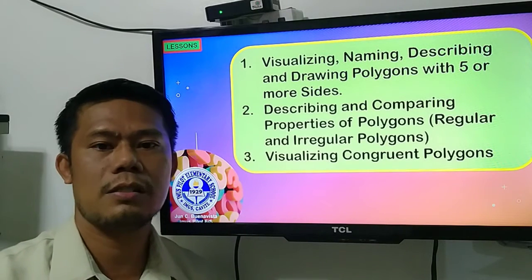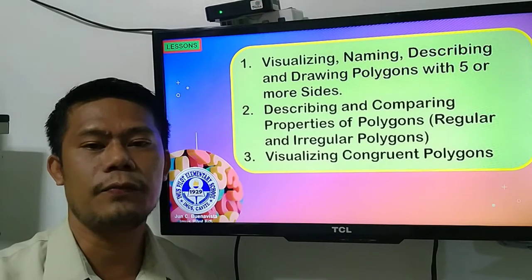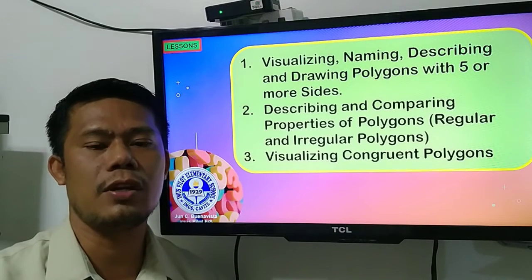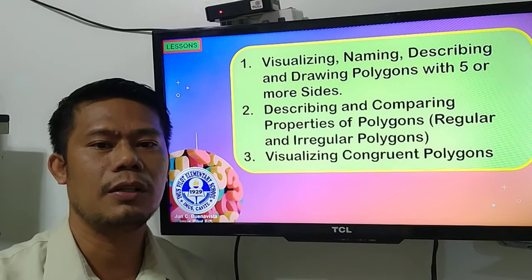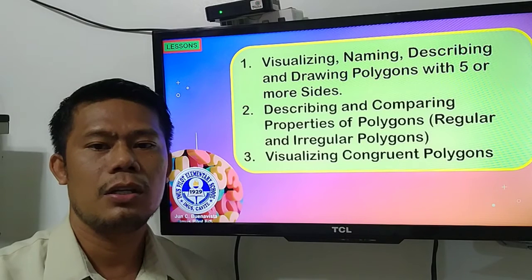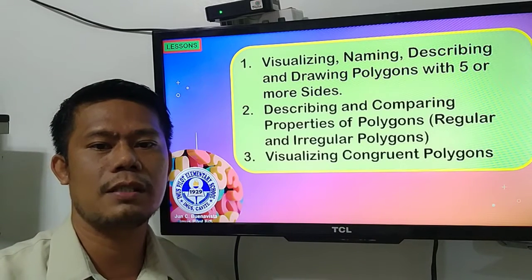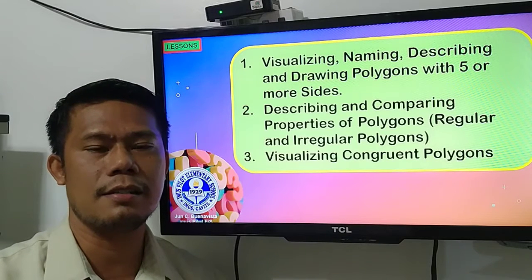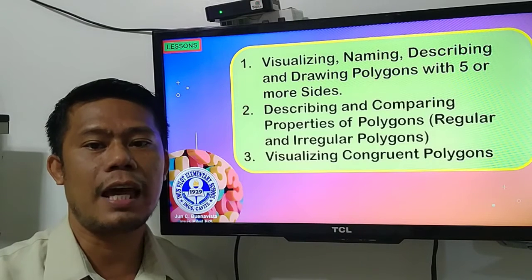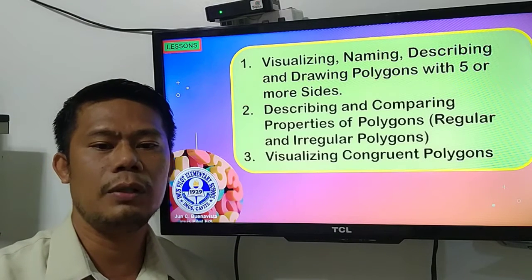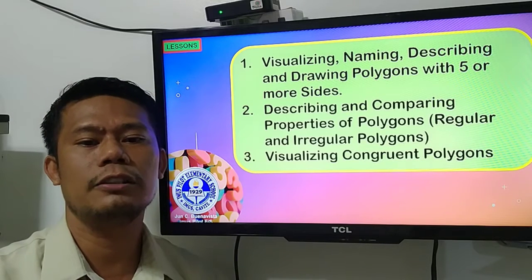Okay, so look around your surroundings. What do you see? Figures and shapes all around. Isn't it wonderful? So all things that your eyes can see were made from different figures, shapes, in all forms and sizes. Now, there is one simple form of math I tell you. So this morning, I will help you to understand more about polygons.